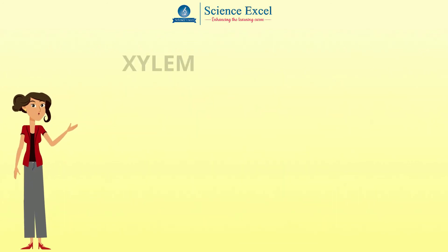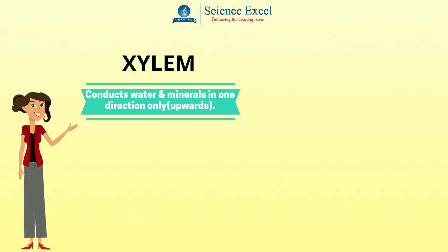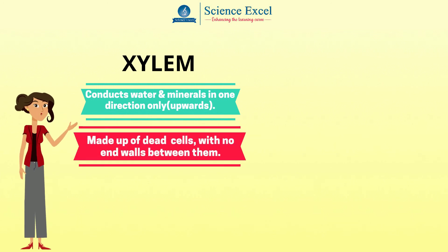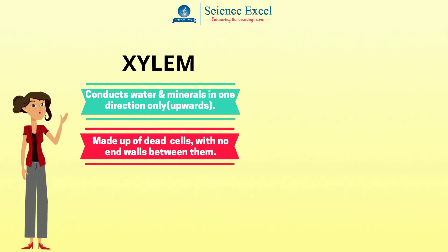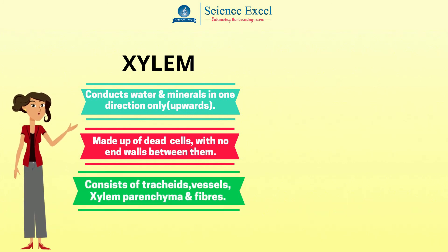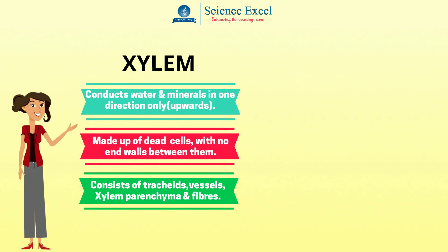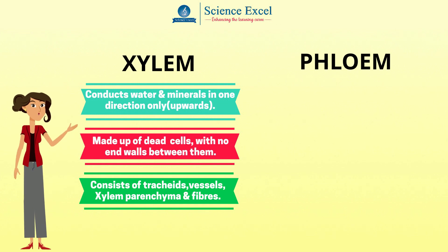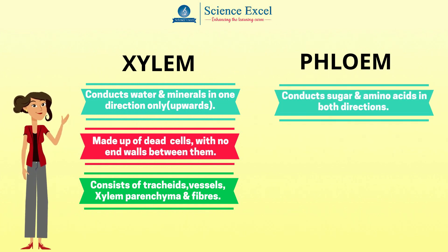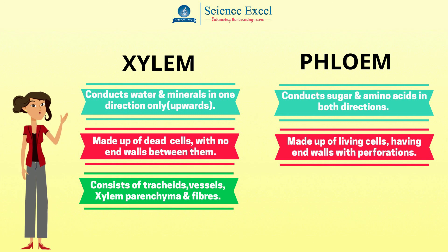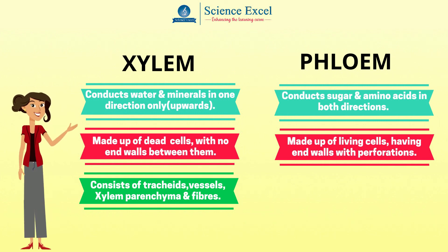Now let us recap. Xylem conducts water and minerals only in one direction, that is upwards. It is made up of dead cells with no end walls between the cells. It consists of tracheates, vessels, xylem parenchyma and xylem fibers. Whereas the phloem conducts sugar and amino acids in both directions, that is upward and downward. It is made up of living cells and the cells have end walls with perforations.